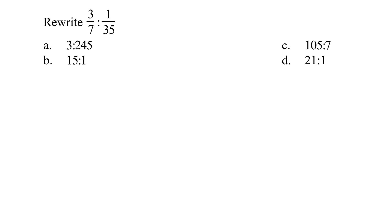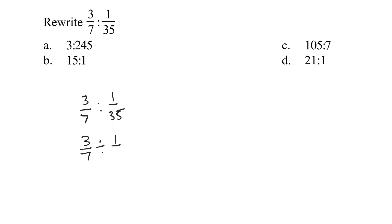All right, we are asked to rewrite this relationship: three-sevenths over one-thirty-fifth. What this is — three-sevenths over one-thirty-fifth — is the same as three-sevenths divided by one-thirty-fifth, which is to say that's three-sevenths times 35 over one.